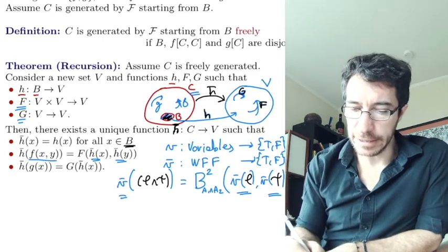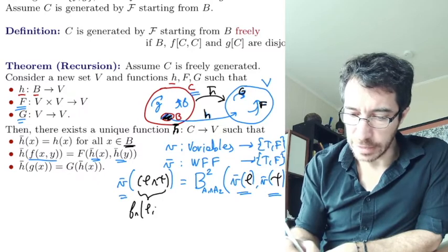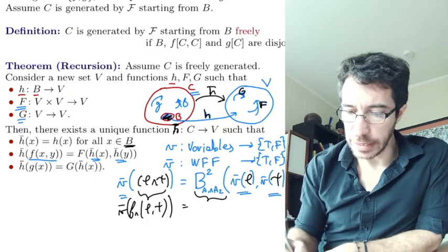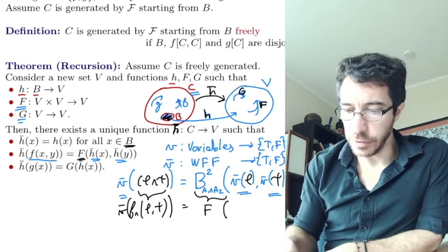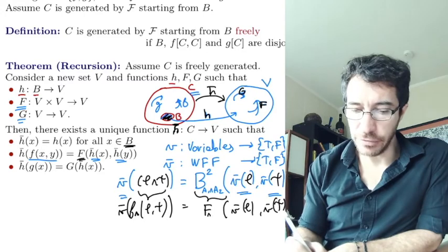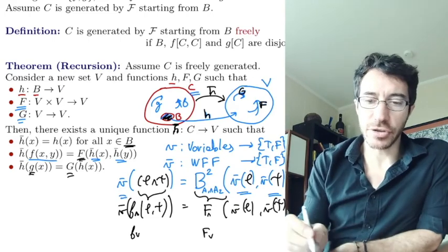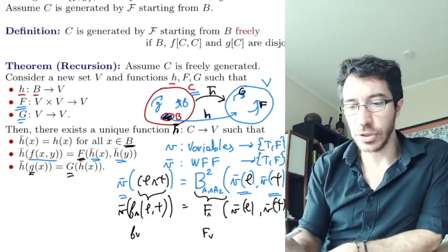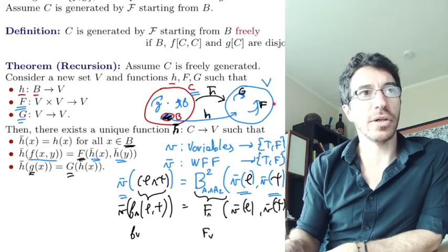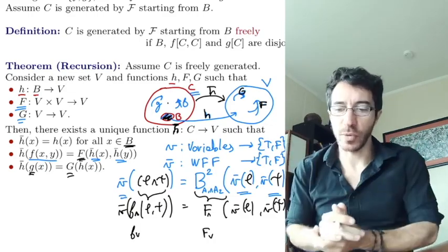So this guy f_AND(phi, psi) from the previous video — we are defining V-bar on it, and the boolean function B_AND is our capital F. For f_OR we have another capital F, and for little g we have a function G. For each function in our family, we have a corresponding function on the V side: the one for OR is the boolean function that gives true if one of the two is true; the one for implies, you know what those are.